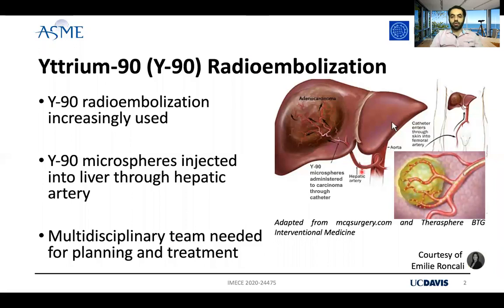To decide about the number of microspheres to be injected and the injection location, a multidisciplinary team is needed. However, the current dosimetry methods used to decide about the amount of injected microspheres are not accurate or precise due to their simplifications. For example, they assume that the microspheres are distributed homogeneously inside the liver.